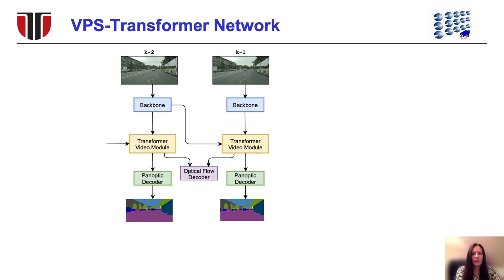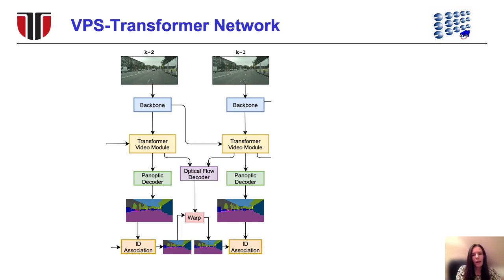Given the enhanced feature representations from the transformer module, convolutional decoders recover the spatial resolution of the input image, and multiple heads perform semantic segmentation, instance center prediction, offset regression, and optical flow estimation. To ensure consistent instance identifiers for the same instance across frames, we implement a simple tracking module based on mask propagation with optical flow and instance ID association between warped and predicted instance masks.